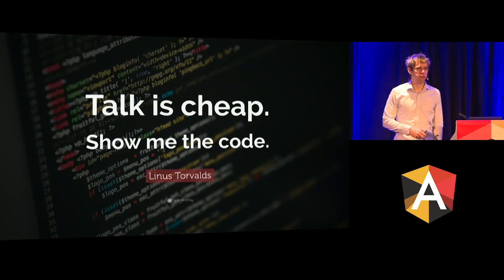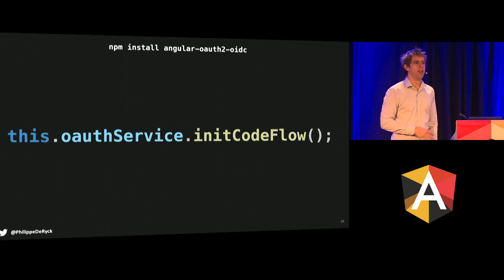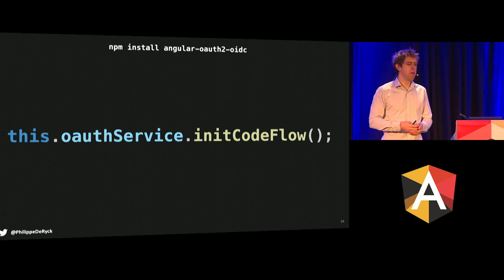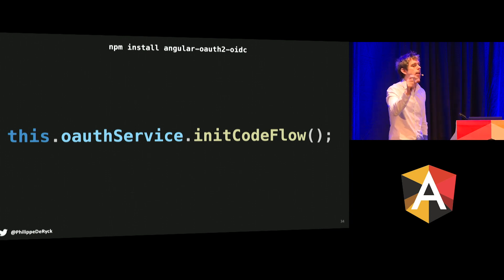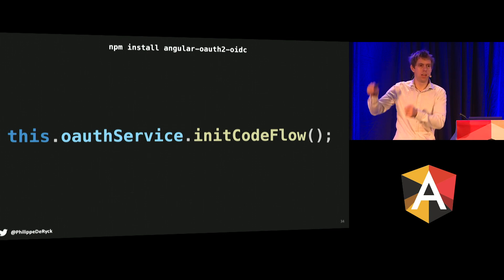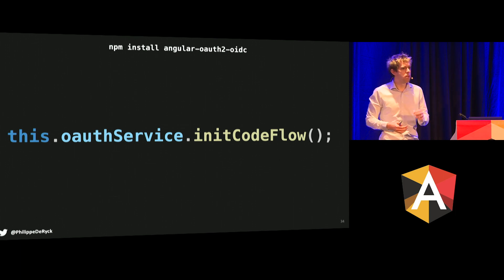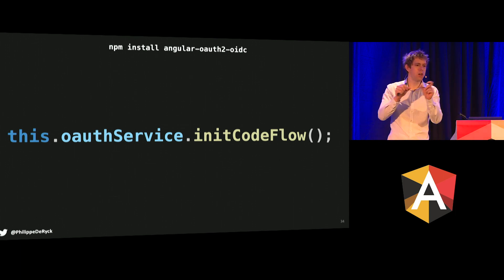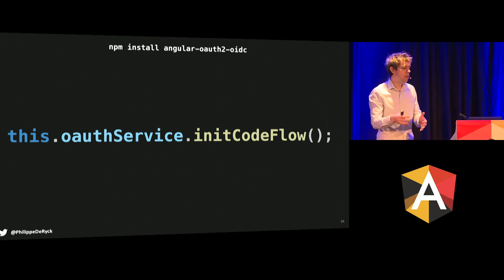Now I have code examples. There's this library from Manfred Steyer — who's here — and this is how you do that. As a developer, this should make you very happy. Remember that very crazy URL with 15 different parameters? Gone. Why? Because the library handles that for you. You configure the library — honestly, I left out like five lines of configuration, literally copy-pasting from your identity provider into your configuration file. Then you call this library and you're done. The library handles all the dirty details — the state, the nonce, generating the code verifier and challenge. You need to pick the right flow and you're good to go.